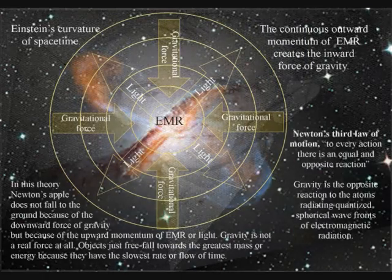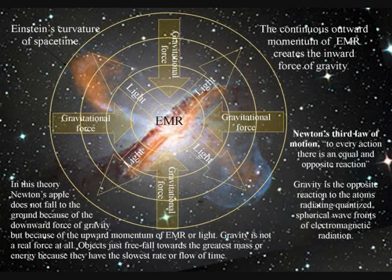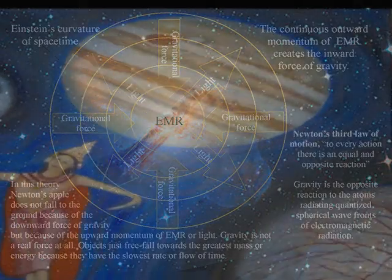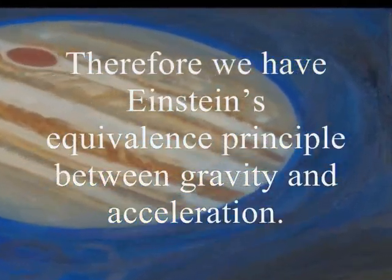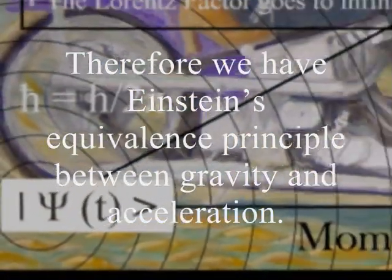In this theory, gravity is a secondary force to the electromagnetic force. Objects just freefall towards the greatest mass or energy because it has the slowest rate that time flows.